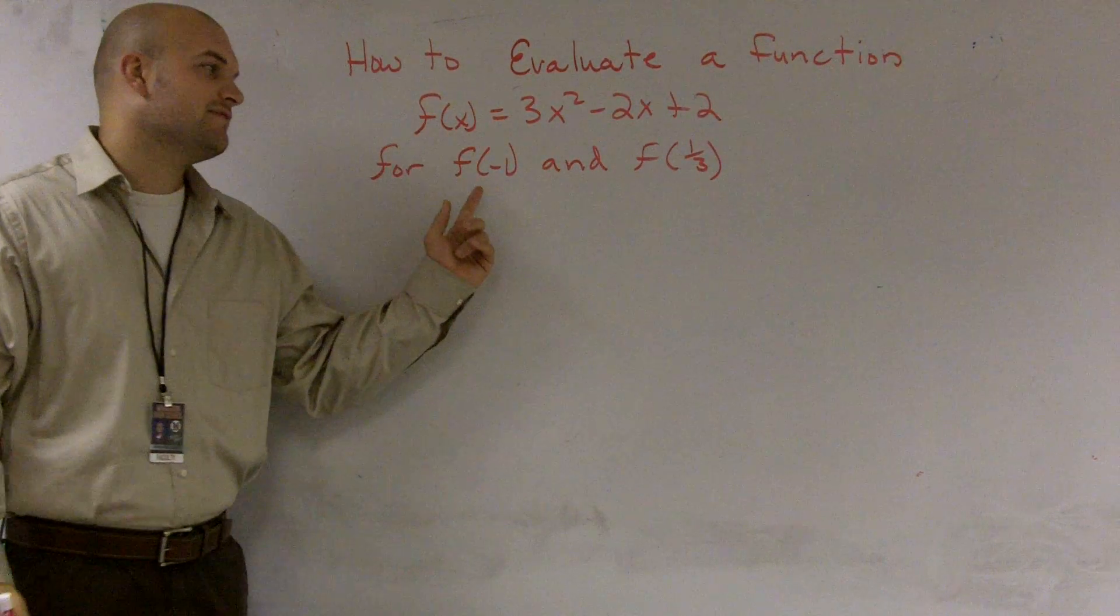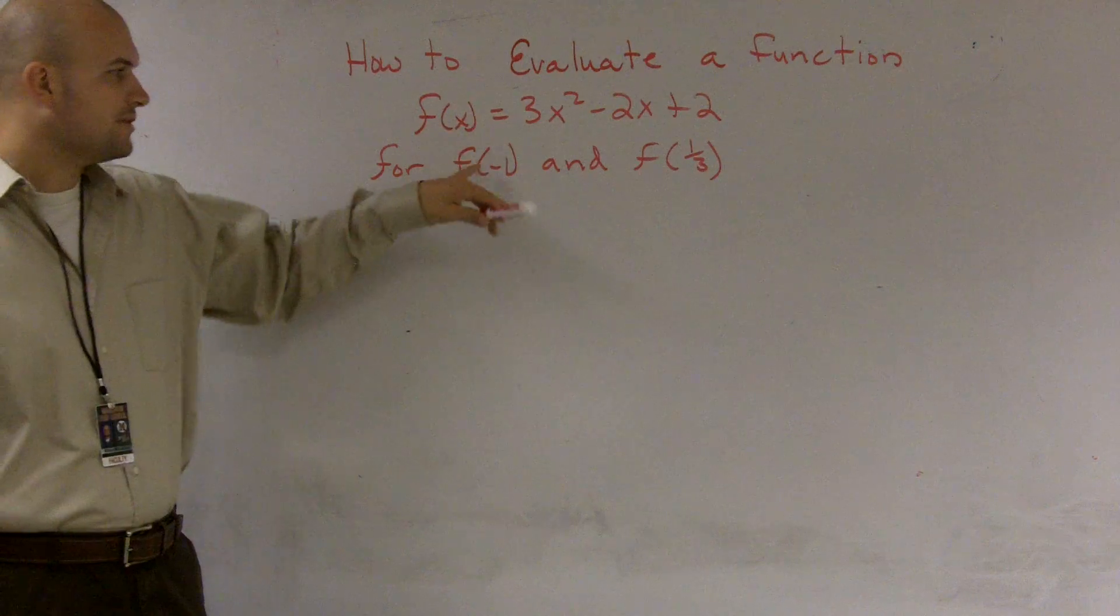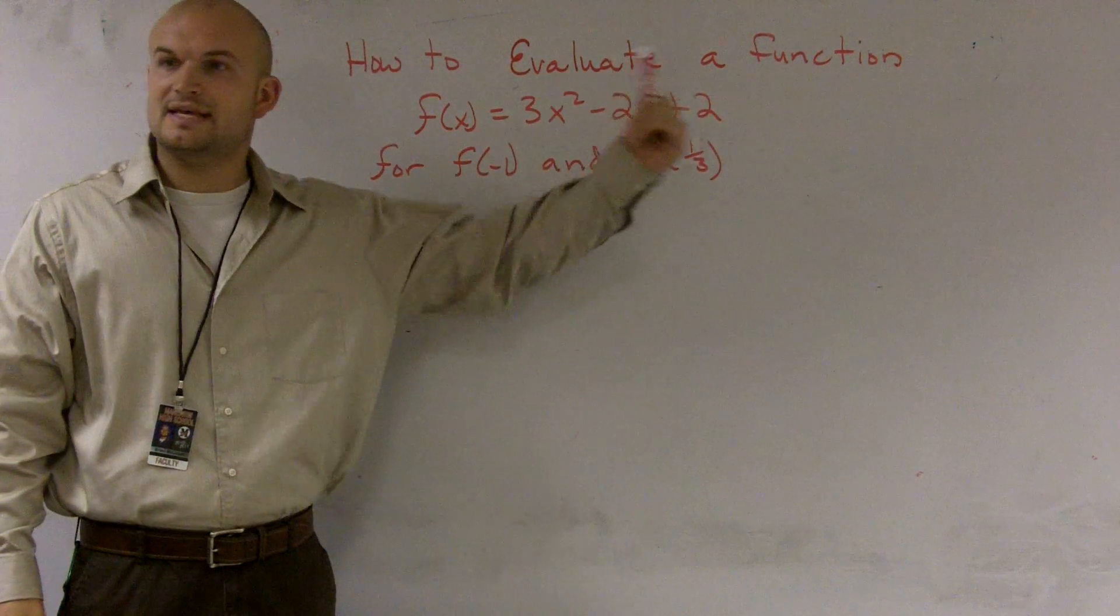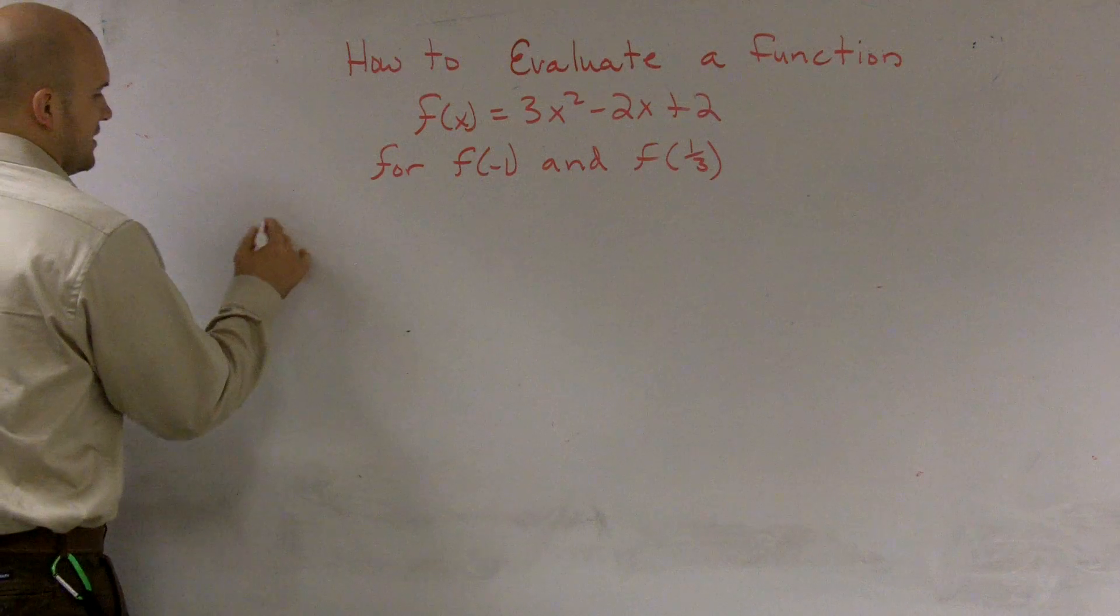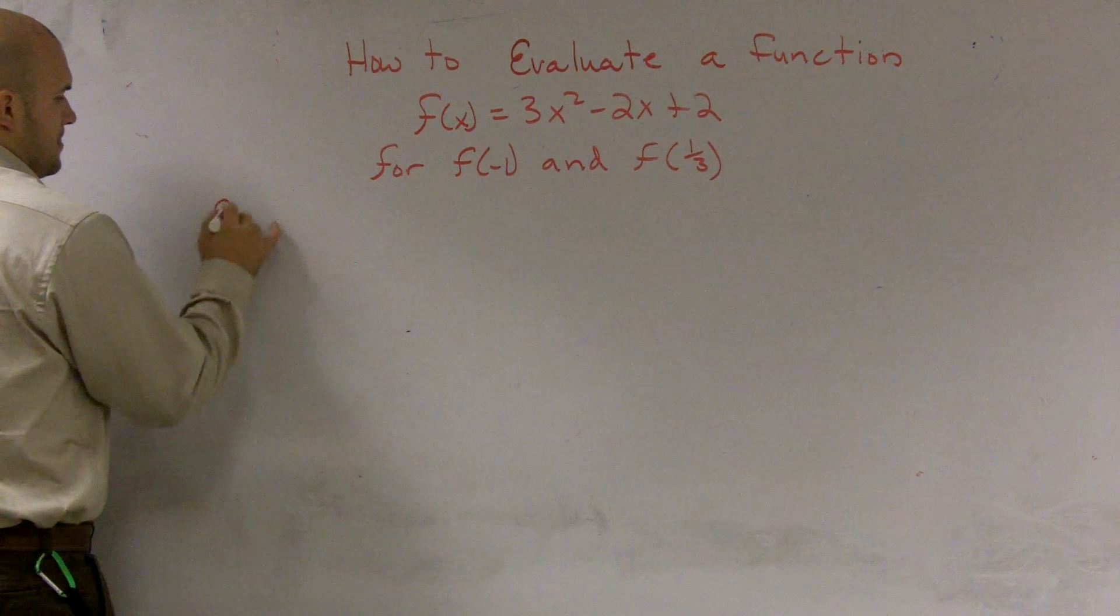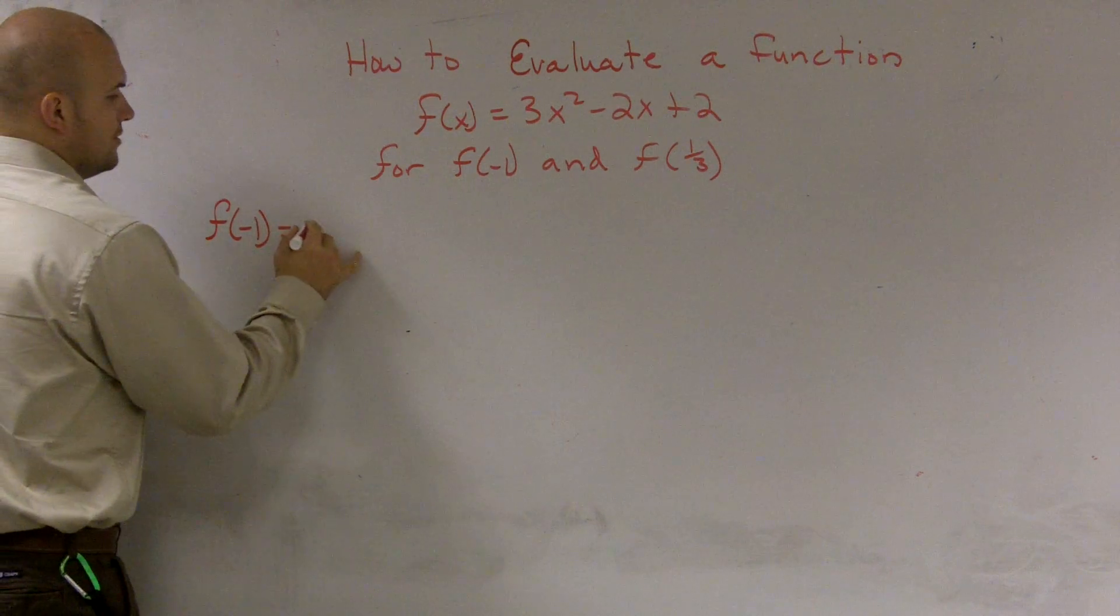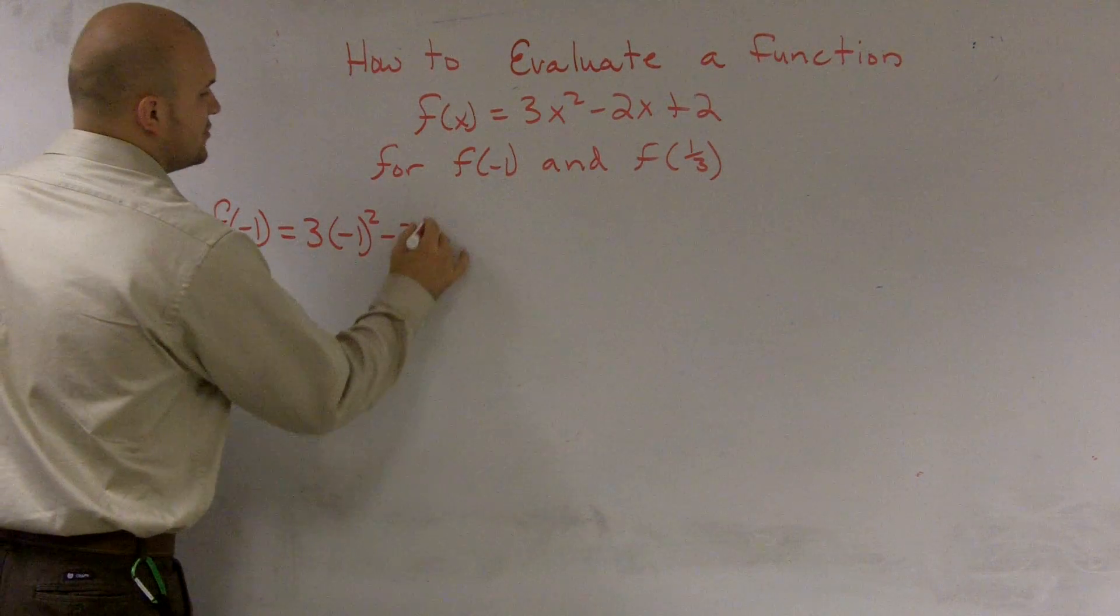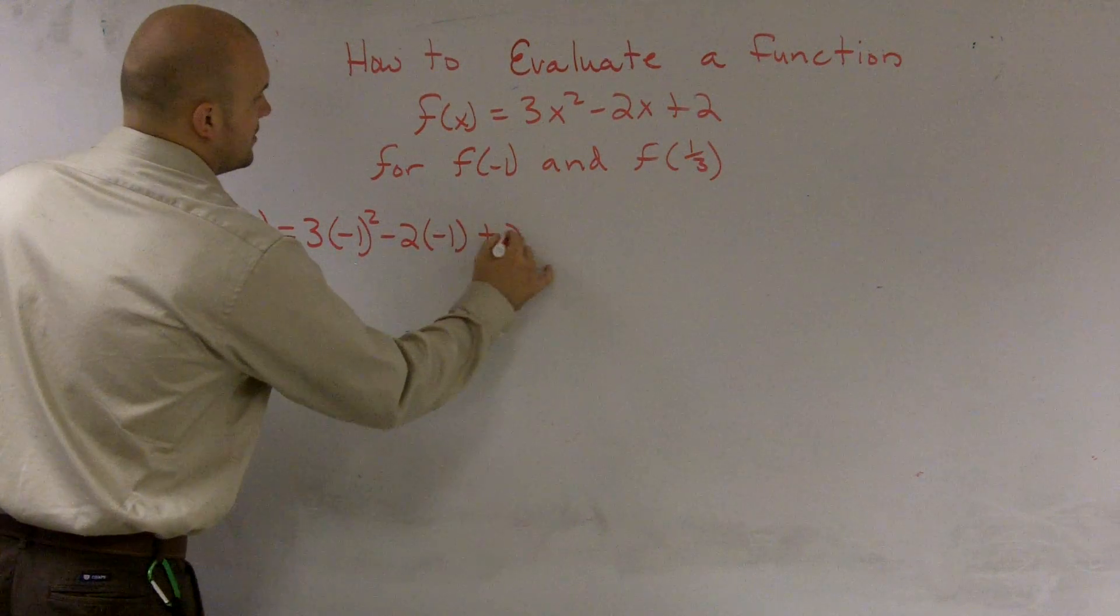So if I want to solve for f(-1), what I'm going to do is I'm going to input that negative 1 into my function wherever I see the x. So therefore, I'll write f(-1) = 3(-1)² - 2(-1) + 2.